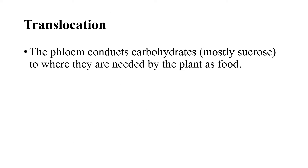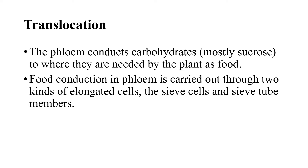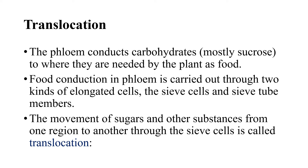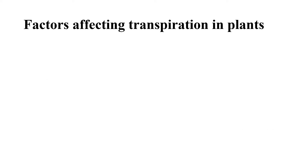Translocation: The phloem conducts carbohydrates, mostly sucrose, to where they are needed by the plant as food. Food conduction in phloem is carried out through two kinds of elongated cells — the sieve cells and sieve tube members. The movement of sugars and other substances from one region to another through the sieve cells is called translocation.